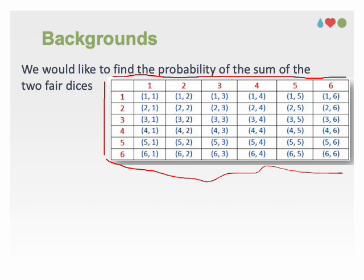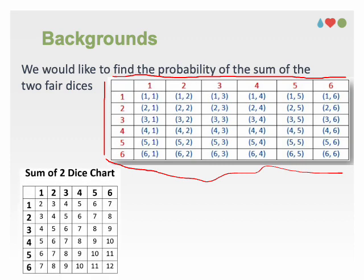So, the total number of outcomes for rolling two dice is 6 multiplied by 6, which equals 36 as shown in this table. Pairs in this table contain the number of outcomes of each dice. 1, 2 shows that the first and the second dice got 1 and 2.